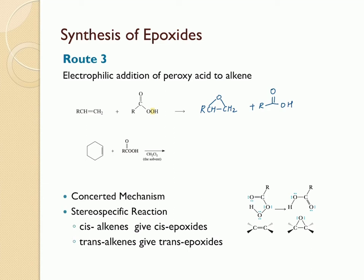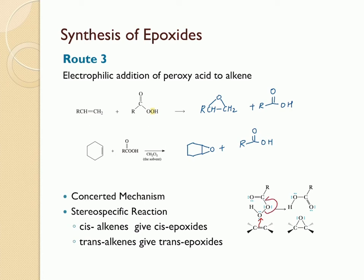For the reaction between cyclohexene and a peroxy acid, we get cyclohexene oxide and the corresponding carboxylic acid. The mechanism happens in a concerted fashion where bond breaking and bond forming occur all at the same time. One of the oxygens in the peroxy acid is electron deficient and is able to accept a pair of electrons from the double bond. This causes the weak oxygen-oxygen sigma bond to break and form a new carbon-oxygen bond, while the pi bond breaks and the electrons from the OH bond add to the other sp2 carbon, thereby forming the epoxide.